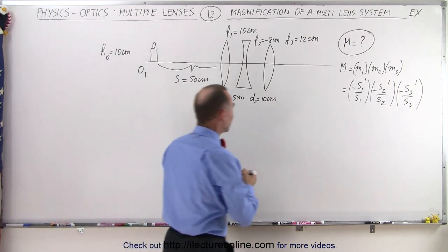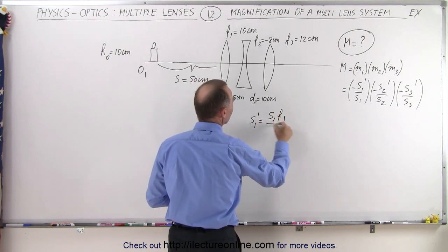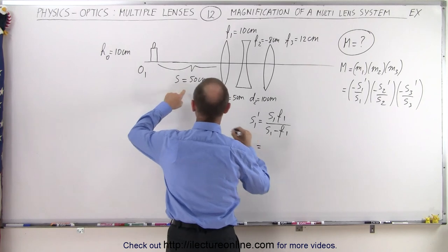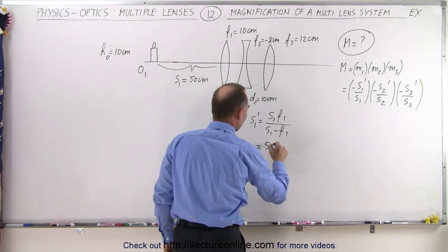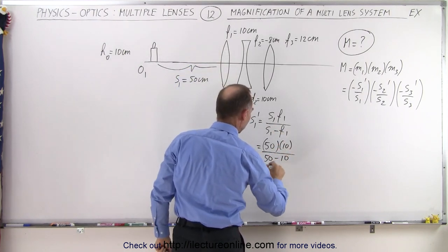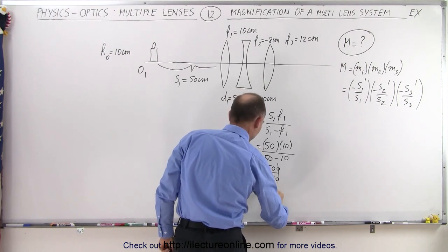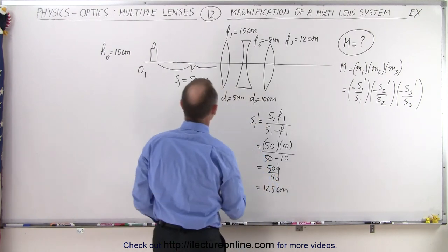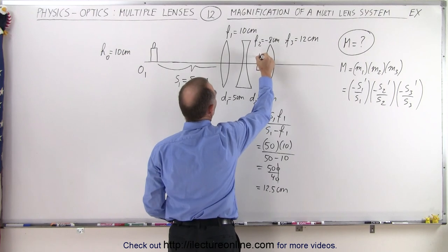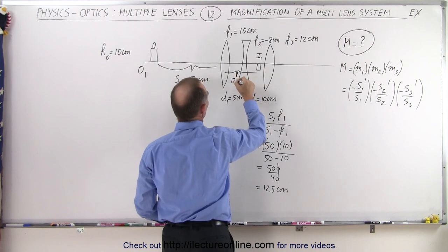The first thing we want to do is start with the first equation: s1 prime is equal to the product of s1 times f1 divided by s1 minus f1. Plugging in the numbers, s1 is 50 centimeters and the focal length f1 is 10, so we get 50 times 10 divided by 50 minus 10, which is 500 divided by 40, giving us 12.5 centimeters. So 12.5 centimeters behind the first lens we find our first image — that's Image 1 at 12.5 centimeters.